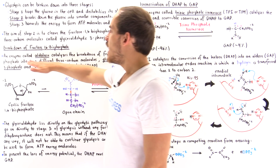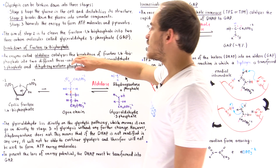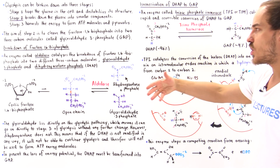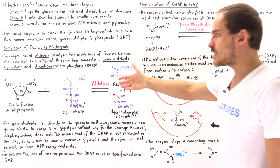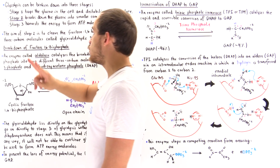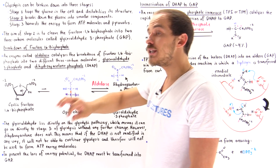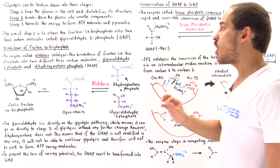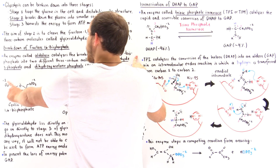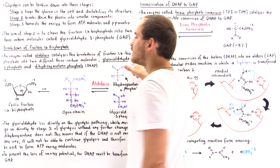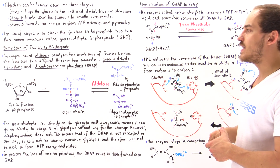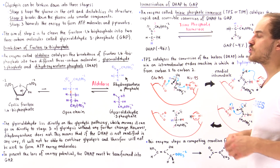So, aldolase catalyzes the breakdown of fructose 1,6-bisphosphate produced in stage one into two different three-carbon molecules: glyceraldehyde 3-phosphate and dihydroxyacetone phosphate, DHAP.